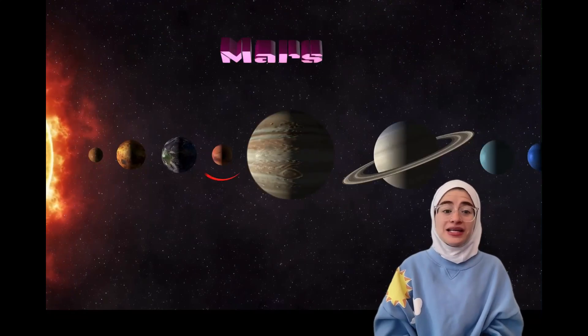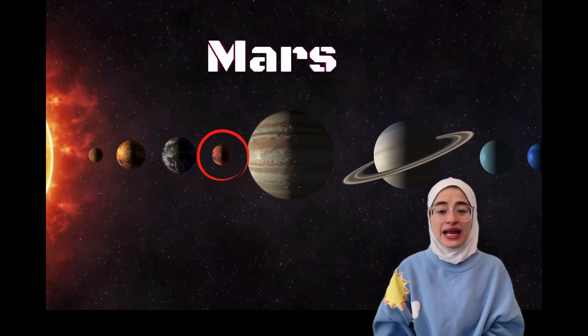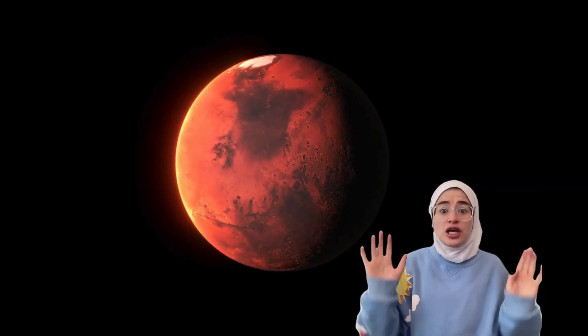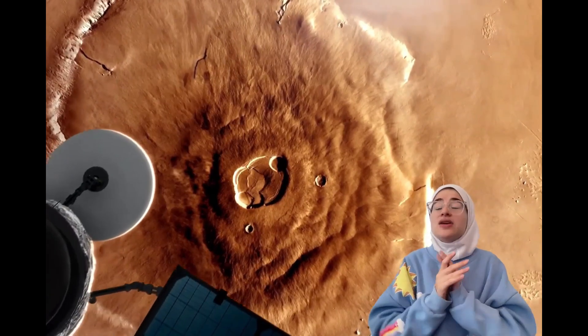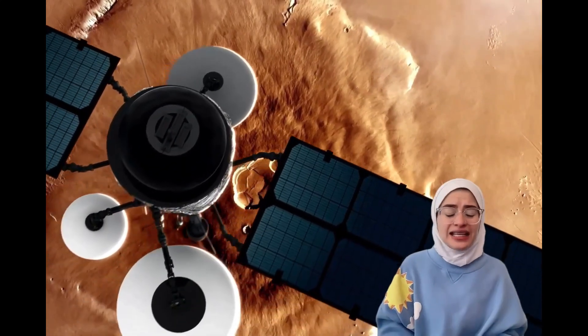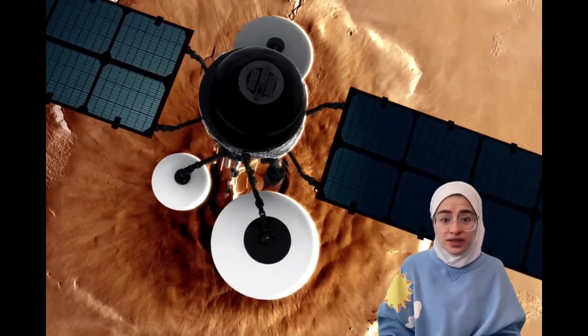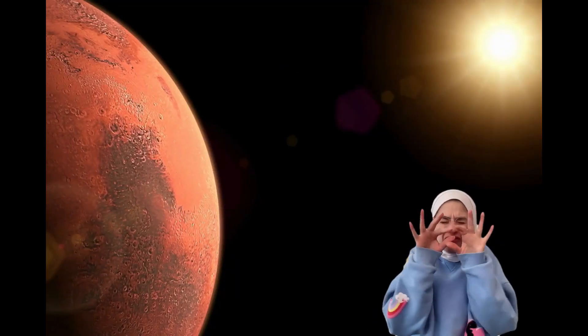Mars is the fourth planet from the sun. Mars, often called the red planet, has a rusty red color because of its iron-rich dust covering its surface. Mars has the tallest volcano and the deepest canyon in the whole solar system. While it's cold and dry with a very thin atmosphere, scientists believe Mars might have had liquid water on its surface in the past.